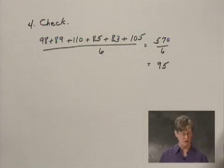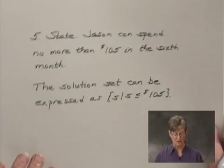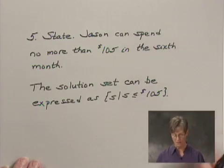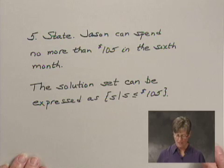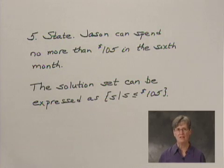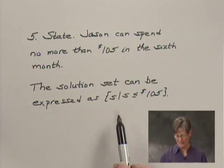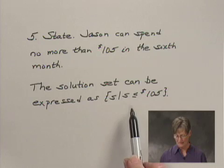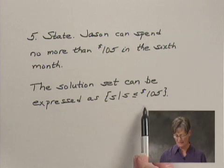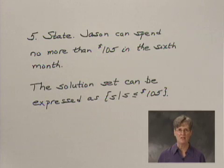We're ready to state the result. Jason can spend no more than $105 in the sixth month. We can also write this as the set of all S such that S is less than or equal to $105.